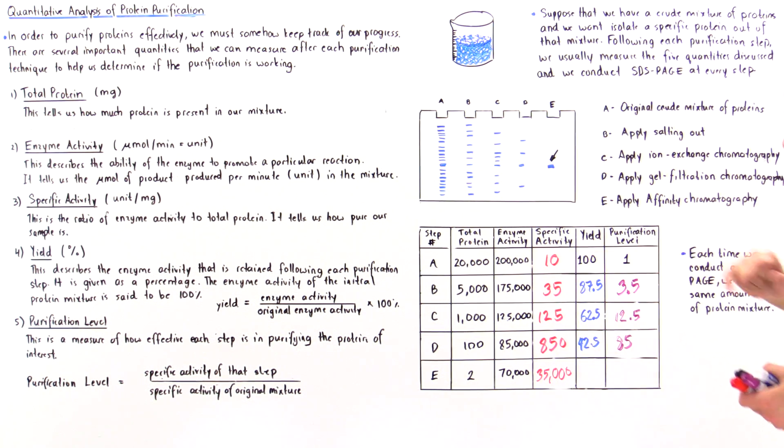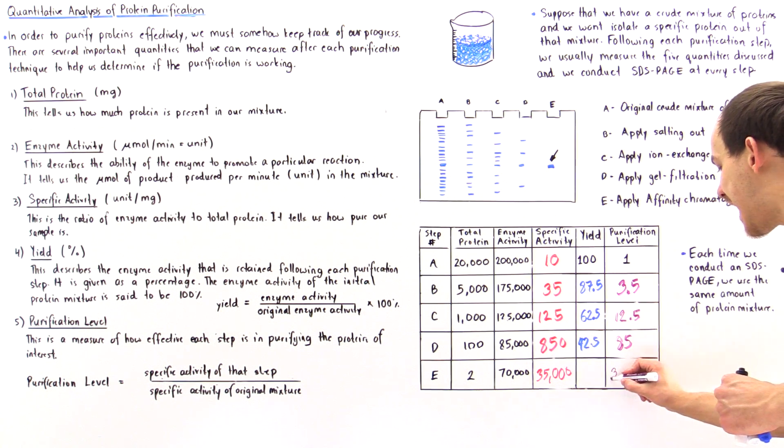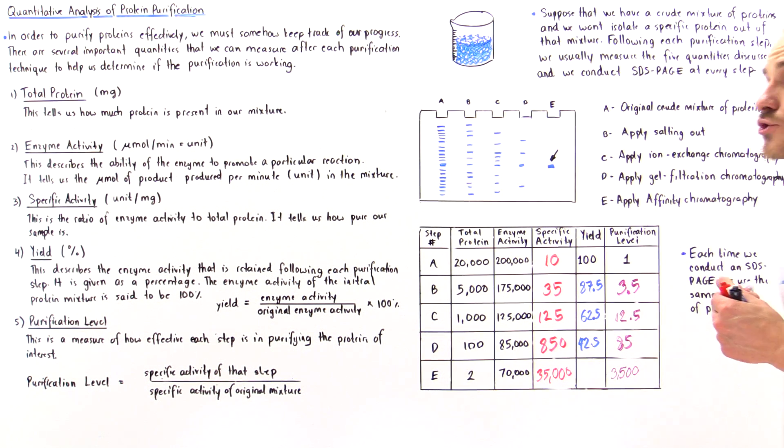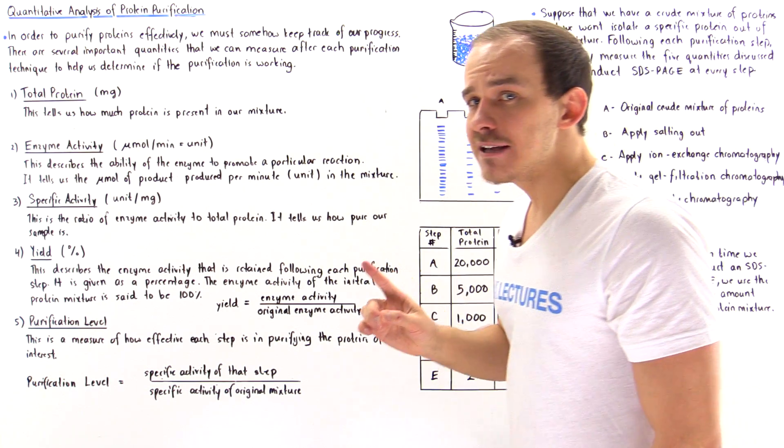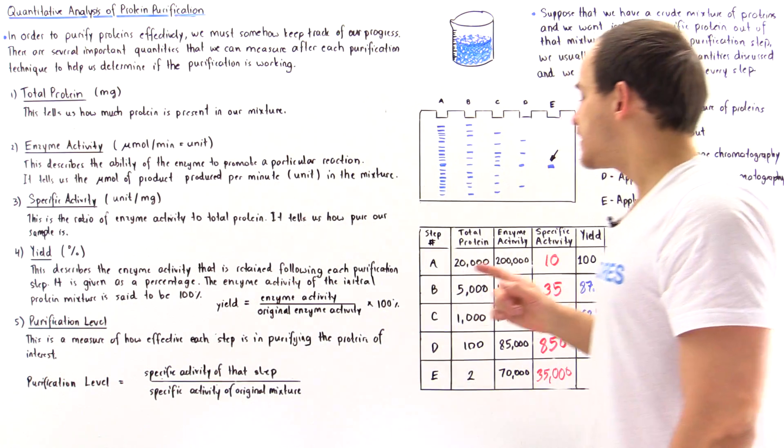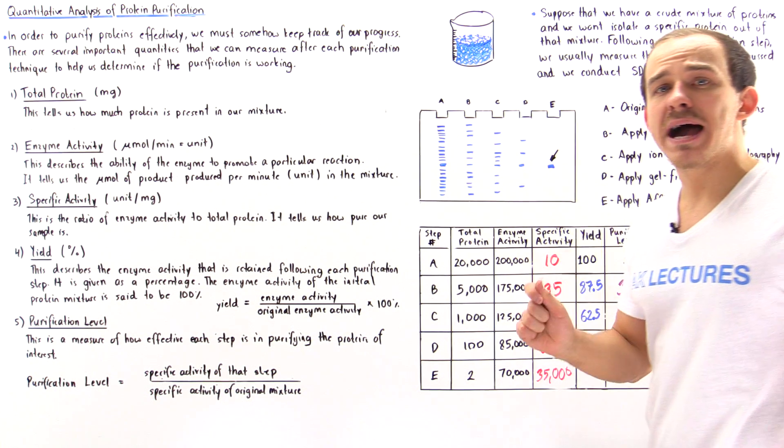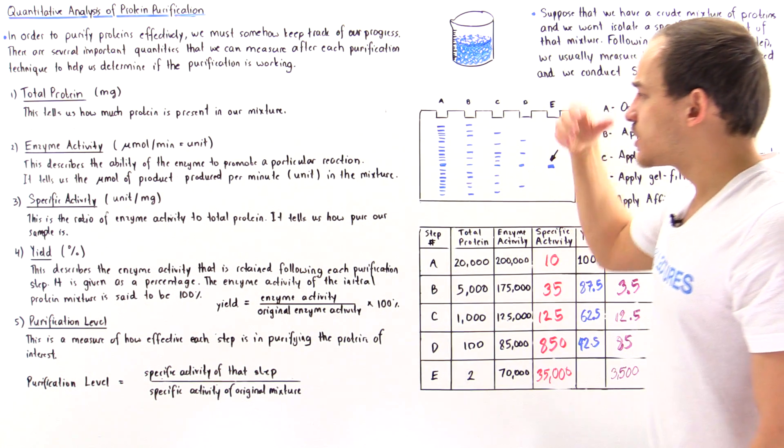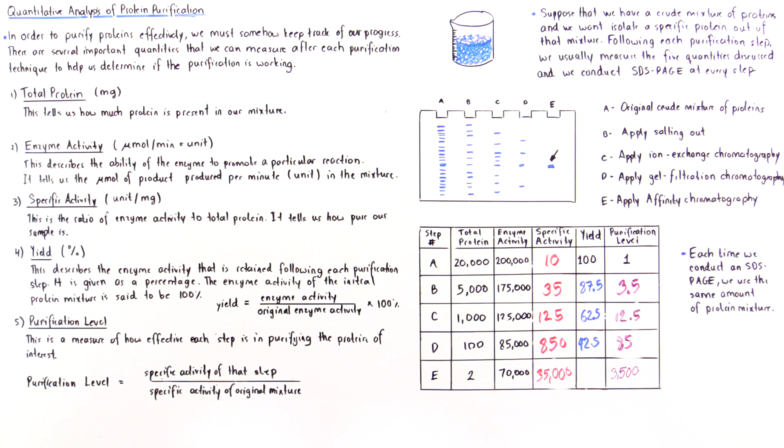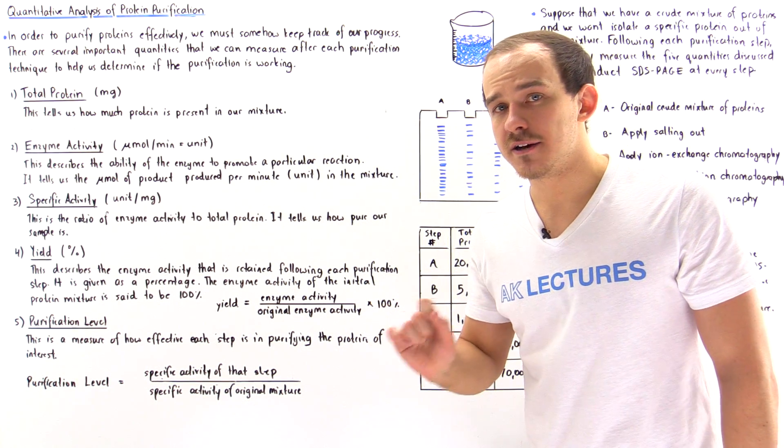What about the purification level? This divided by this gives us 3500. That means after all the procedures we conducted, the final extracted mixture is 3500 times as pure as that initial sample, and that is a high amount.